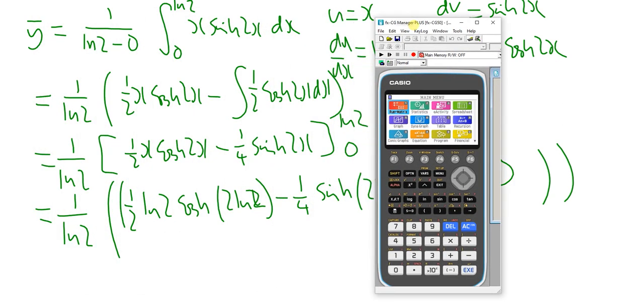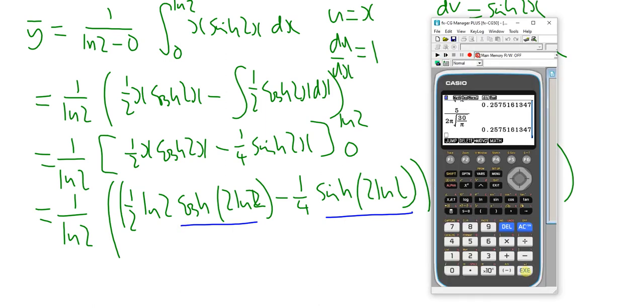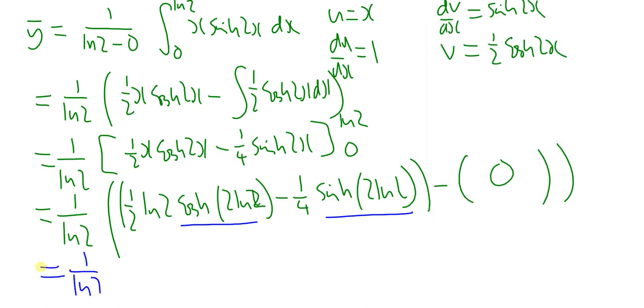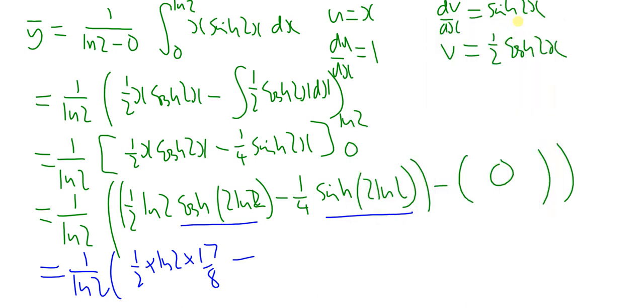To finish this off, I'm going to simplify it on my calculator, because your calculator will simplify cosh of 2ln2 and sinh of 2ln2 nicely for you. On your calculator, press option, f6, f2, then cosh of 2ln2. That gives 2.125, if I do a fraction, 17 over 8. This gives me 1 over ln2 into a half times ln2 times 17 over 8. Take away sinh of 2ln2, which is 1 quarter times 15 over 8.